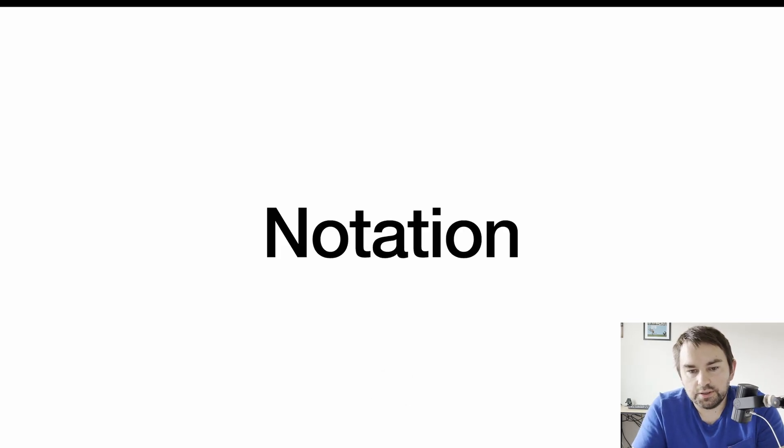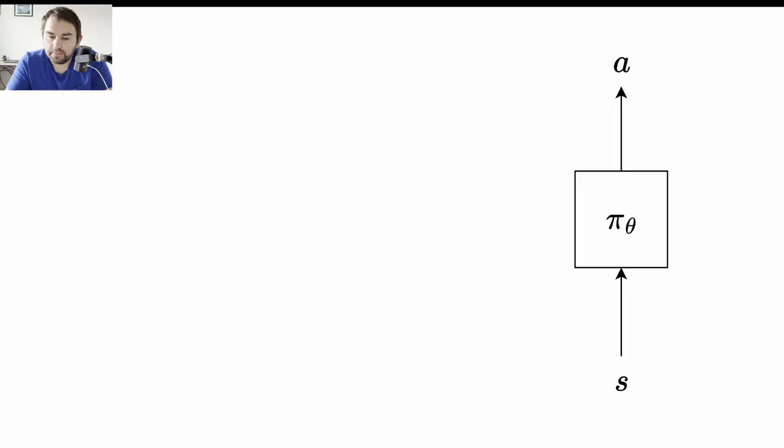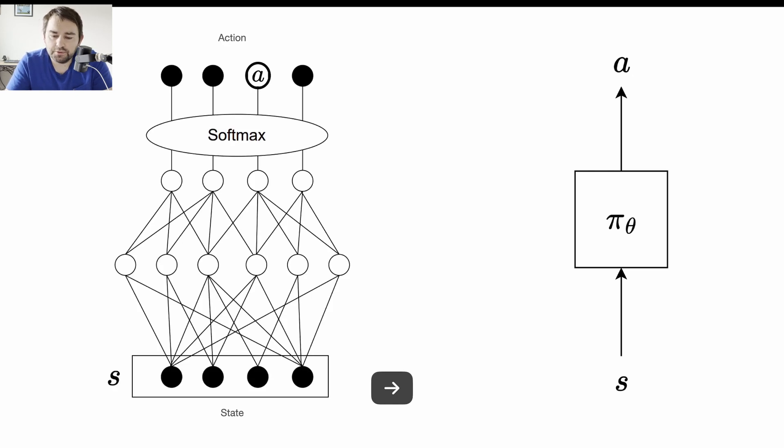All right, before we get started with the proof, let's get some notation out of the way. So here we have a policy, some policy π. It takes some state and produces an action. I really like to think of this as a neural network. This neural network has some parameters, weight, θ. And the output of the neural network is a softmax over some actions. And the final action being selected is A. And the input is some vector S or tensor S, which is our state.